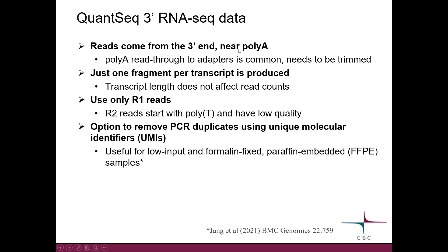As the reads come near polyA, polyA read-through to adapters is common and we need to trim it. In this data, only one fragment per transcript is produced as opposed to normal RNA-seq, and because of this, transcript length does not affect read counts. We use only the R1 reads because R2 reads start with polyT and tend to have low quality.